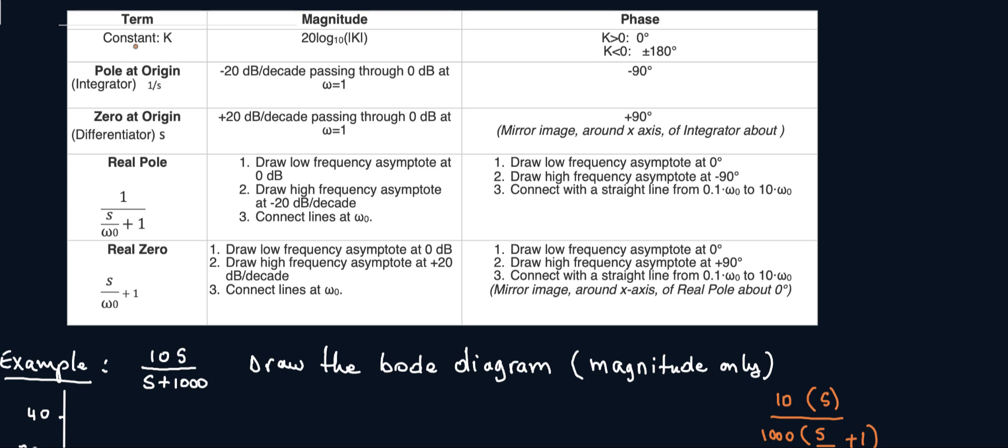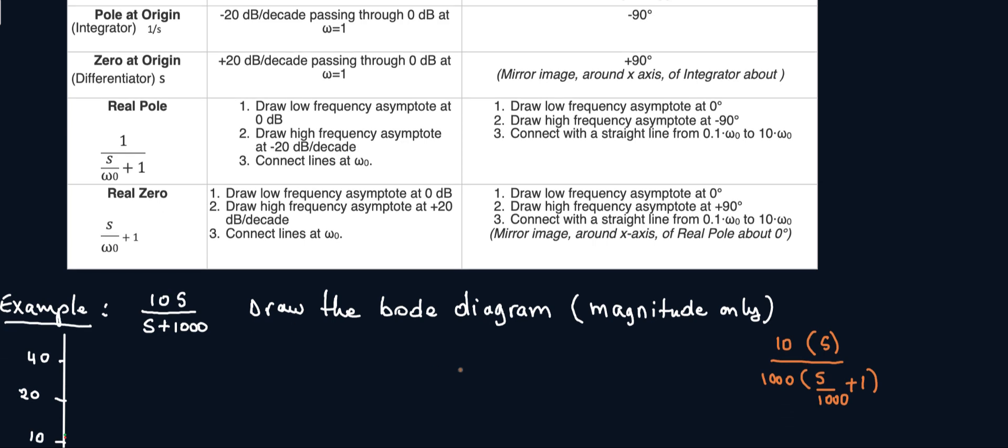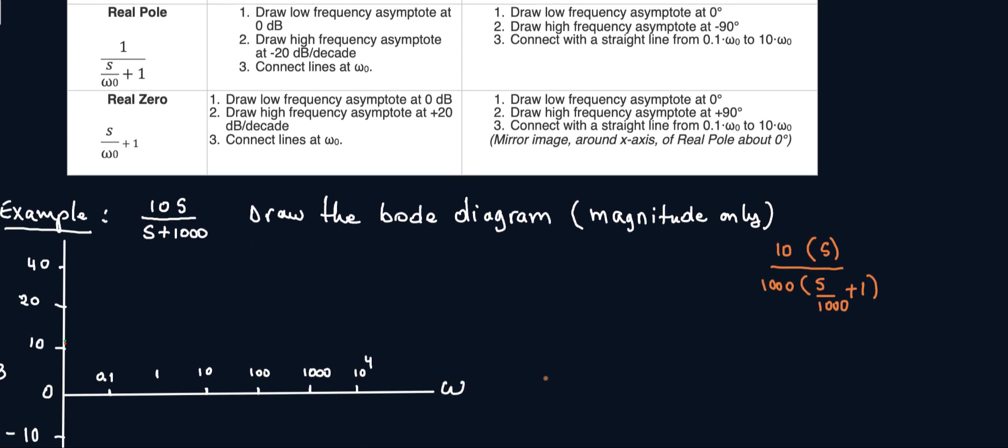So you can either have a constant, a pole at origin, zero origin, real pole or real zero. So in this case what do we have? We know we have a constant. The reason why you're doing this is because for each term you're going to draw the Bode plot and then sum them together.